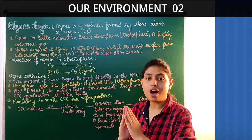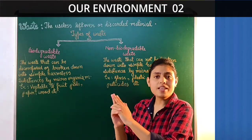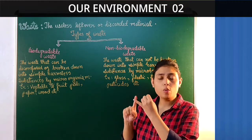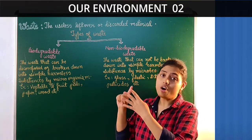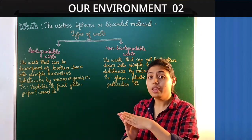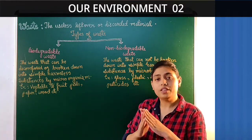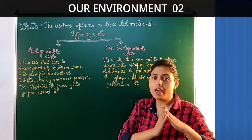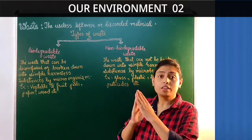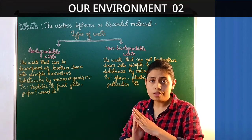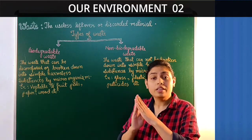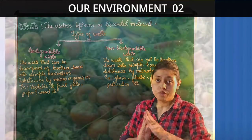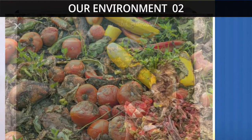Now let us move to our last topic of this chapter. The useless, leftover or discarded material is known as waste. It can be domestic waste, community waste, industrial waste, or agricultural waste. On the basis of the way of their disposal and their persistence in the environment, waste can be classified into two groups: biodegradable waste and non-biodegradable waste. Biodegradable waste is waste that can be broken down or decomposed by microorganisms present in nature into simple harmless substances — for example, fruits and vegetable peels, wood, paper, etc.